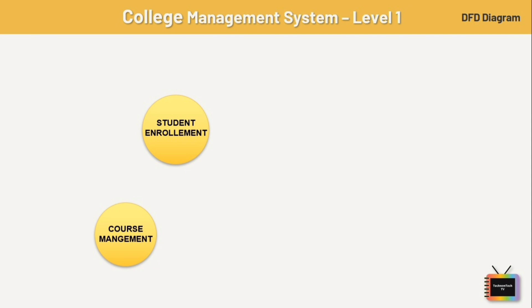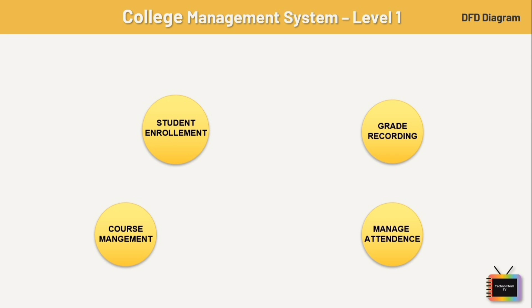Next is course management — this process deals with managing courses offered by the college. It includes activities such as course creation, updating course information, assigning faculty members to courses, and maintaining the course catalog. Next, we have grade recording, which enables faculty to assign grades to students.